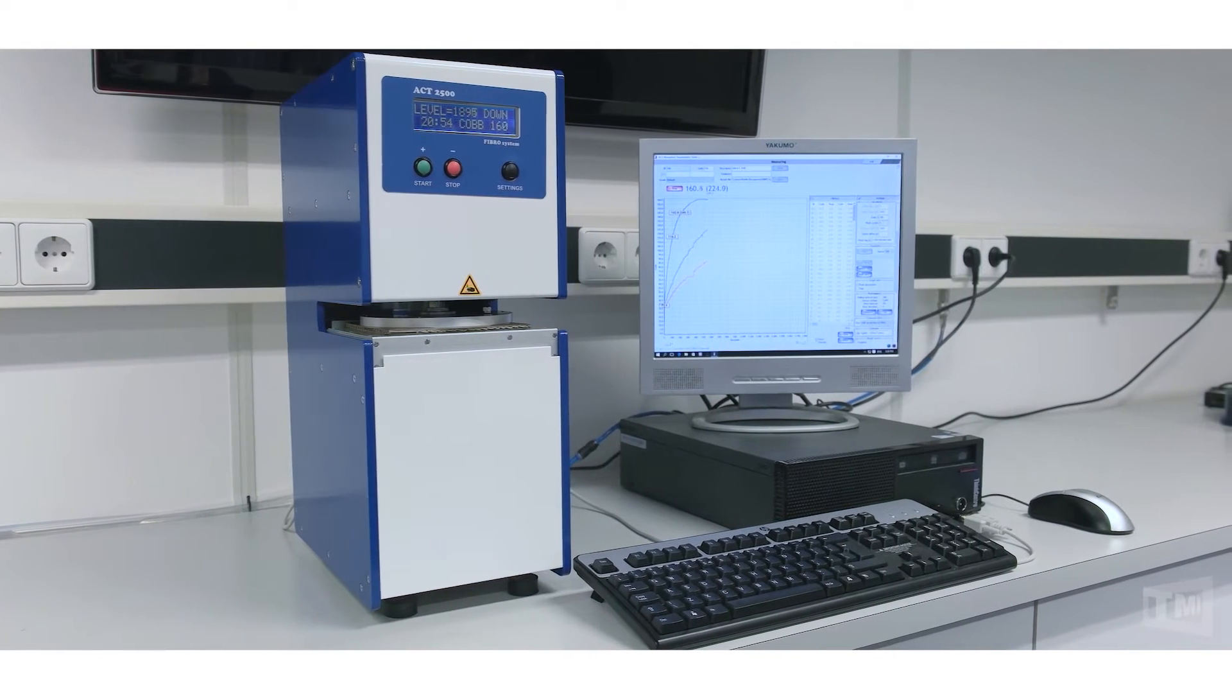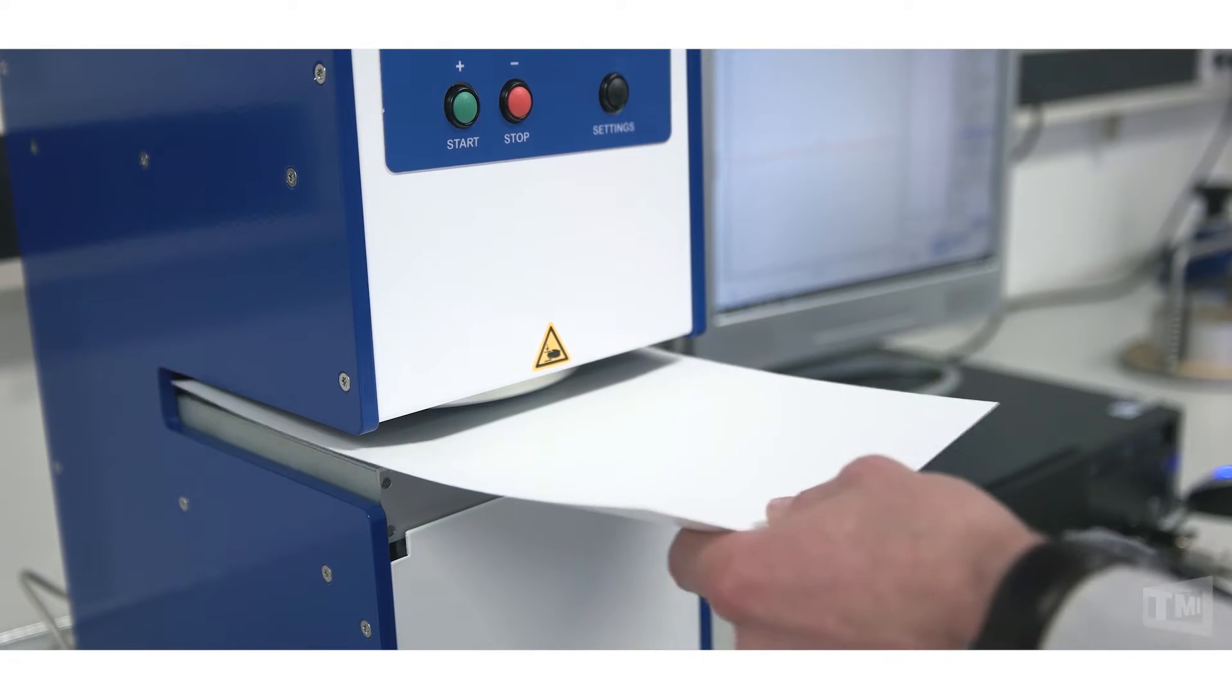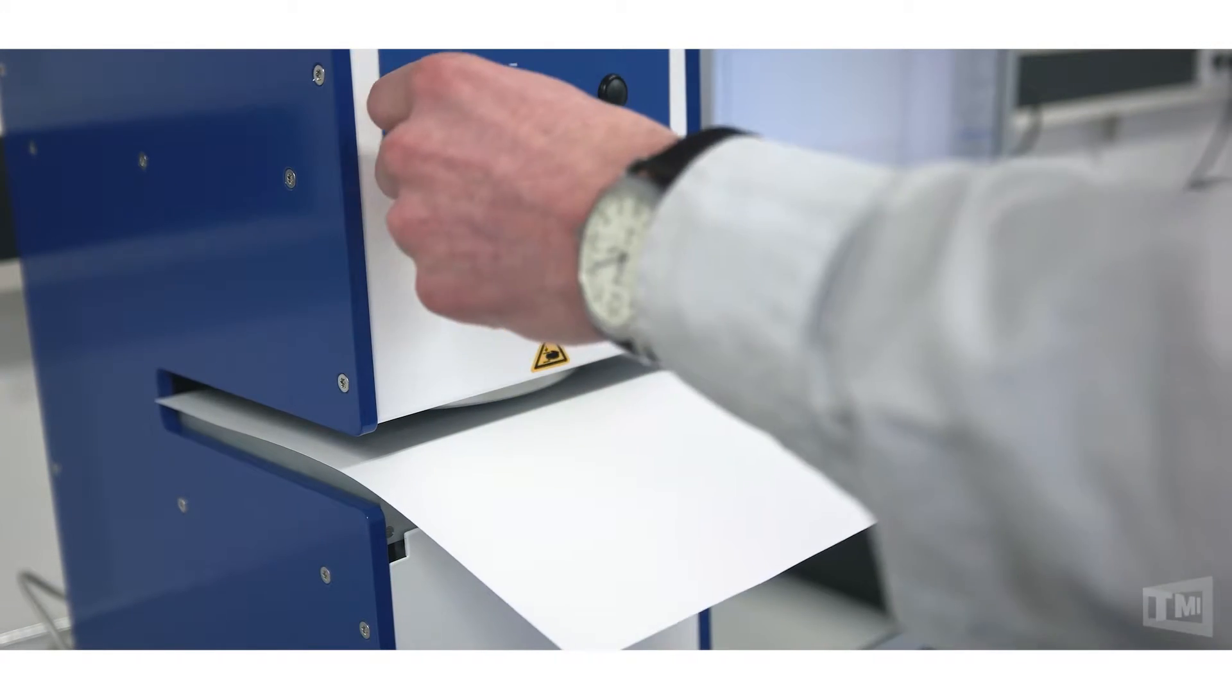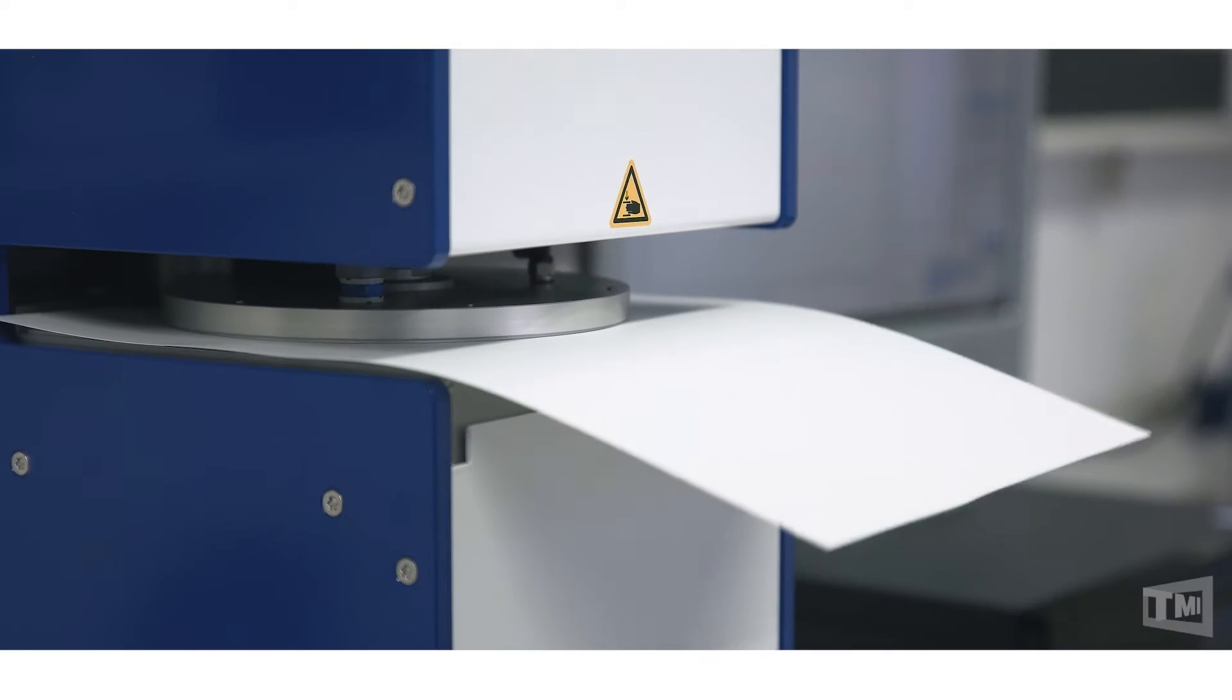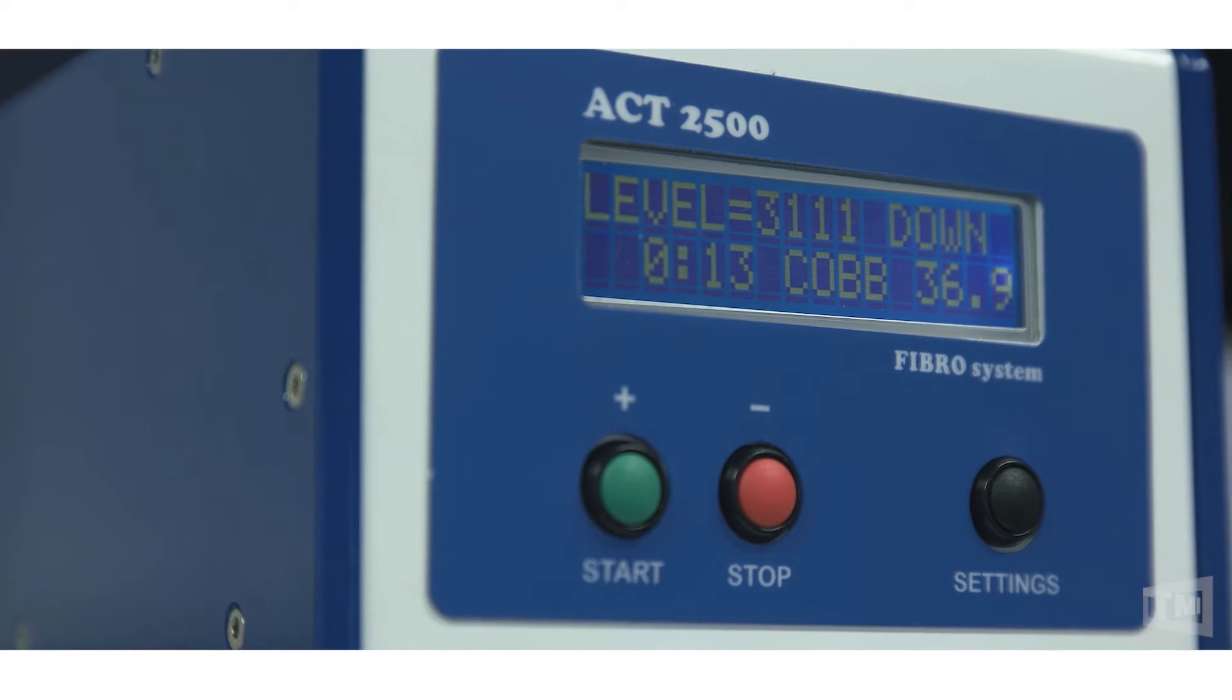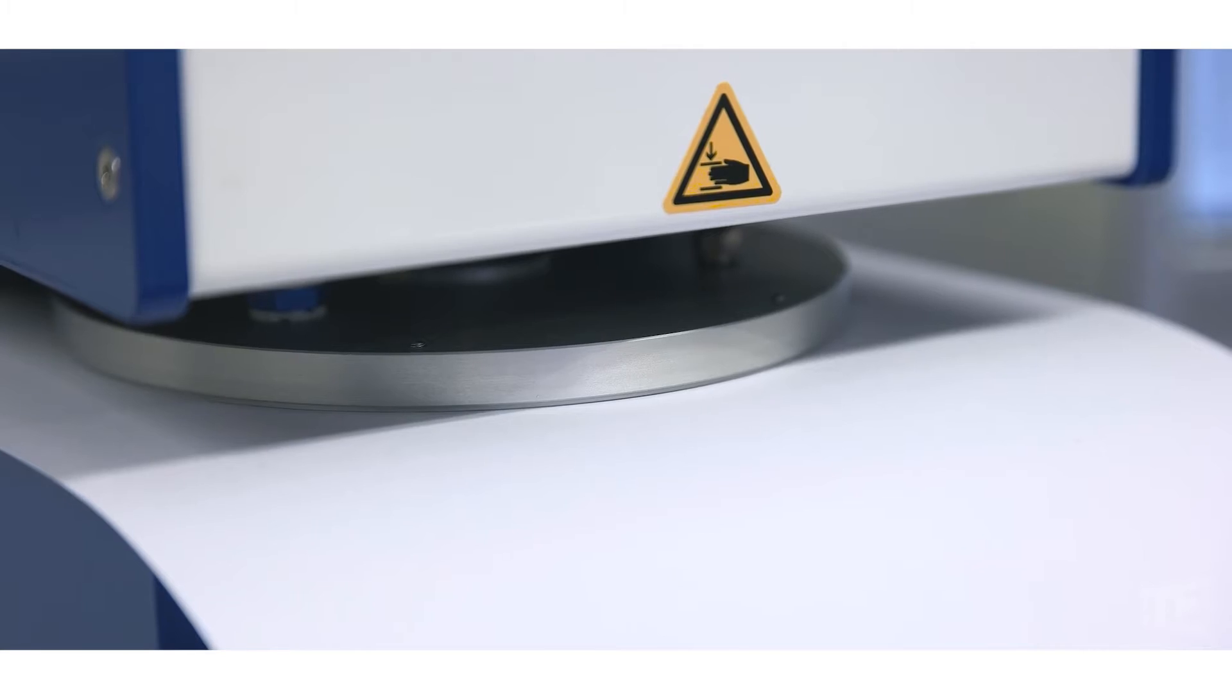The Absorption Characteristic Tester or ACT uses a sized or coated specimen placed on a porous glass disc, 100 square centimeter, from which the specimen draws water and the uptake of water is continuously monitored to produce a dynamic absorption curve automatically.